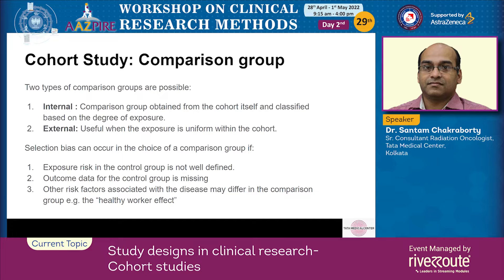When outcome data for the control group is missing, this is inadequate follow-up procedure, and other risk factors associated with the disease may differ in comparison — this is known as the healthy worker effect. It means that to work or continue working you need to be healthy, so if you select a group based on working versus not working, you have already defined your cohorts based on the outcome instead of the exposure of interest.